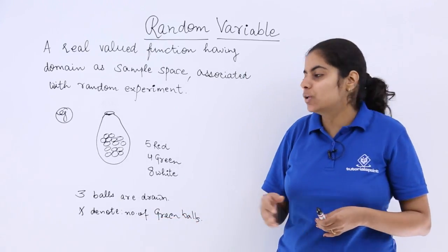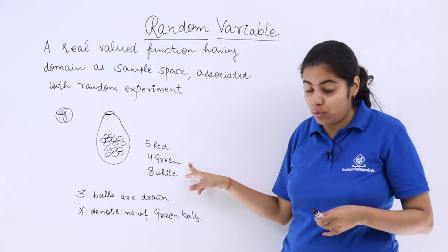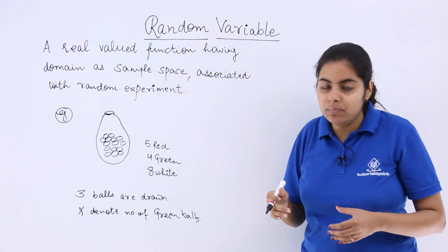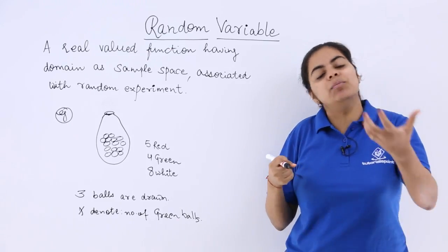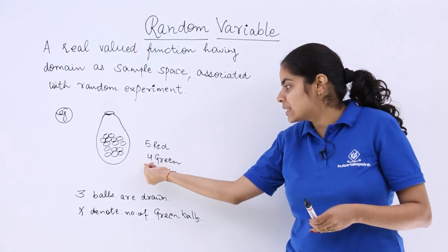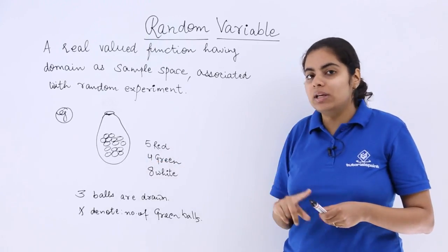So if x denotes number of green balls which are here 4. So if I have to talk about random variable, the random variable actually has some range and that range will come out from this number. See there are 4 green balls.